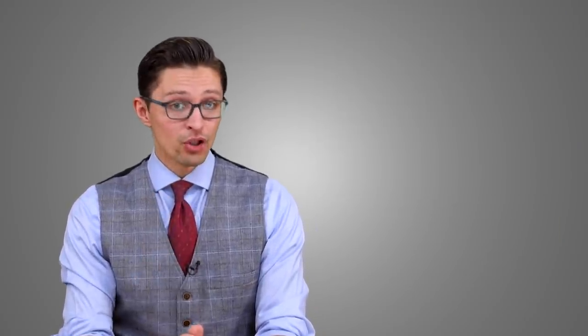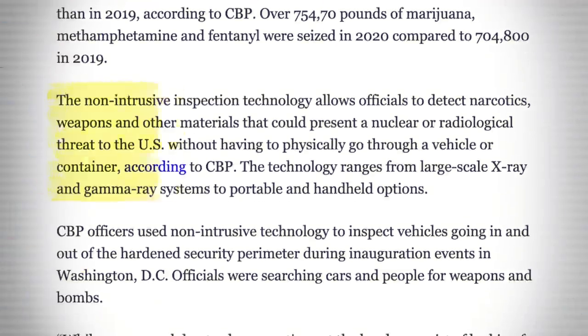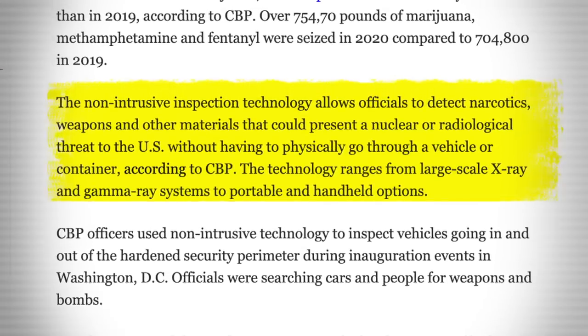Four days ago, this agency announced that in 2020, they seized over 800,000 pounds of illegal narcotics making their way up through the southern border. Of note, nearly half of these drugs, 470,000 pounds to be specific, were discovered using a new screening technology. They refer to it as non-intrusive inspection technology, and it allows officials to detect narcotics, weapons, and other materials that could present a nuclear or radiological threat to the U.S. without having to physically go through a vehicle or container.